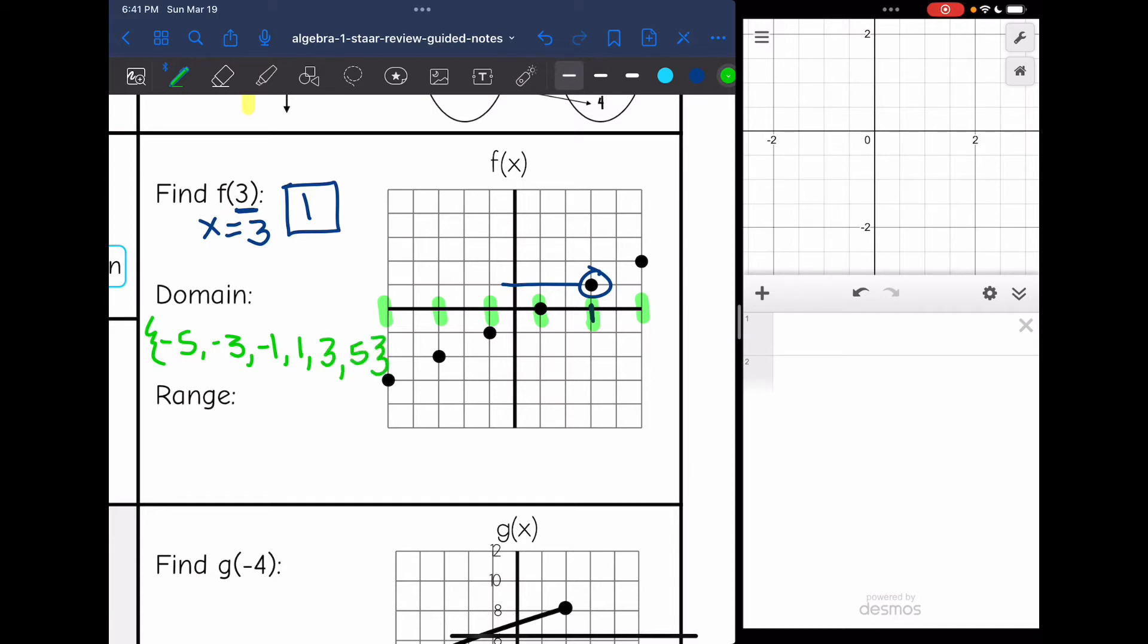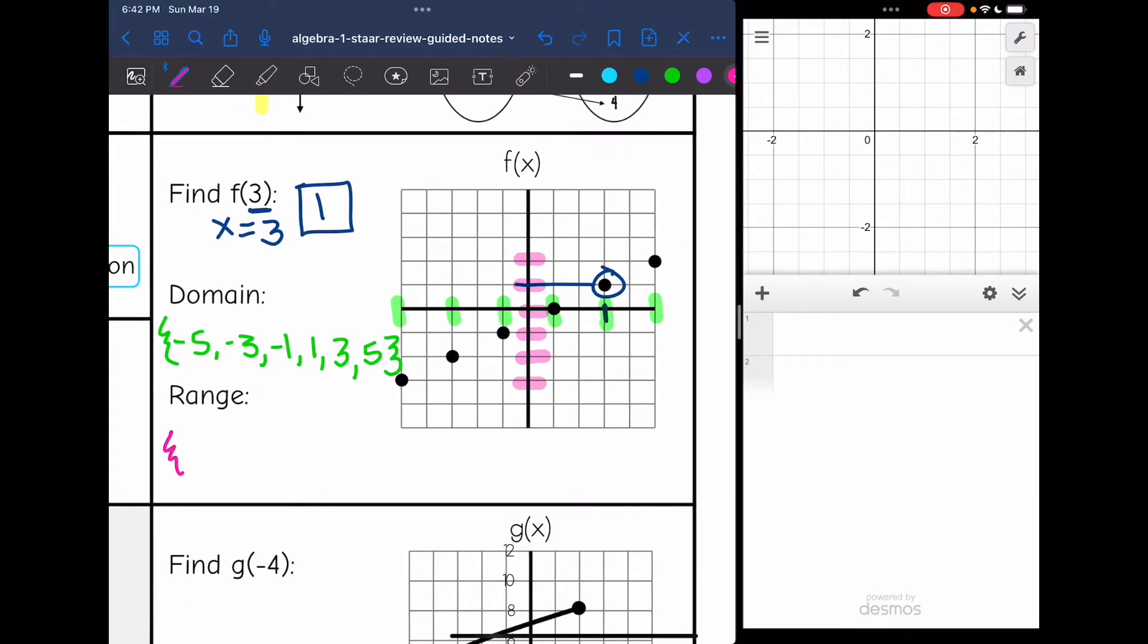And then the range is similar, but I'm looking at the y value. So I'm going to go from bottom to top. And the y values are -3, -2, -1, 0, 1, and 2. So -3, -2, -1, 0, 1, and 2.